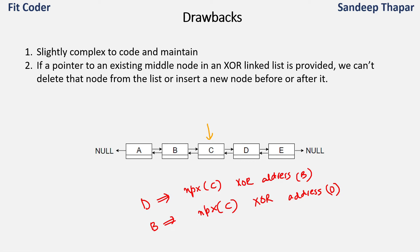The third drawback is that XOR of addresses is not supported in a few programming languages. That is also one of the reasons this is not a very popular form of linked list. It is good to know from an interview or theoretical perspective — someone might ask how to make a doubly linked list more memory efficient — but in real-life software industry applications it is not very frequently used.